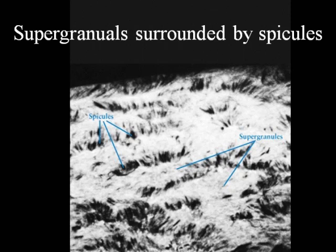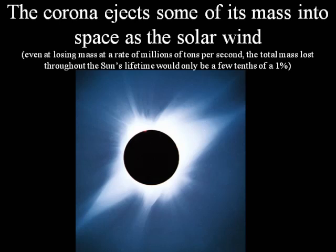We have spicules, and we also have another feature called a supergranule. Notice that the spicules somewhat surround this. A supergranule is a larger structure of the Sun where many, many granules are together, and these granules are surrounded by tubes or columns of gas that stick up into the chromosphere. So these regions are called supergranules.